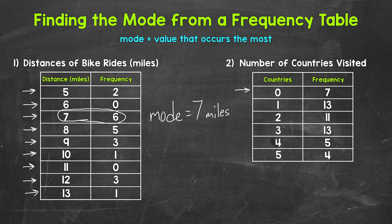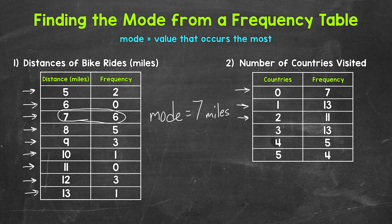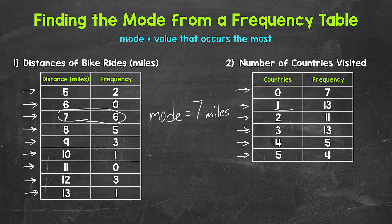So 0 countries, 7 people. 1 country, 13 people. 2 countries, 11 people. 3 countries, 13 people. 4 countries, 5 people. And then 5 countries, 4 people. So it looks like 1 country occurred 13 times.